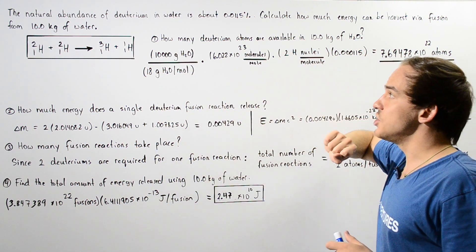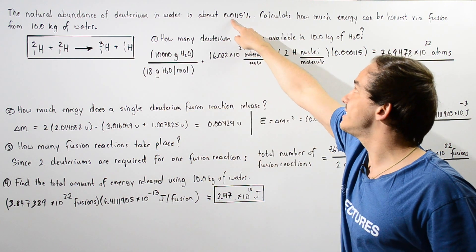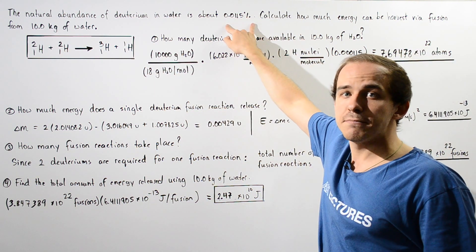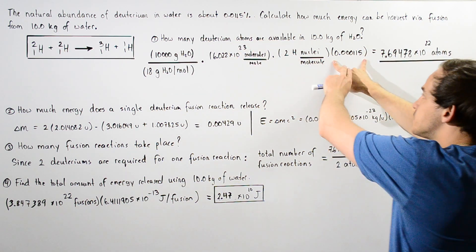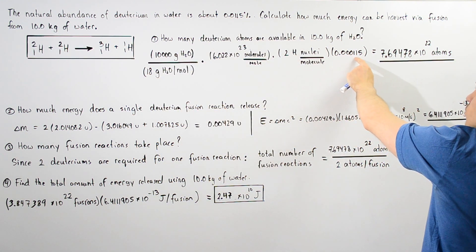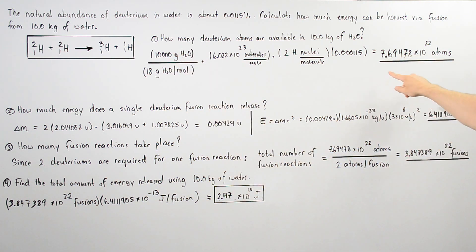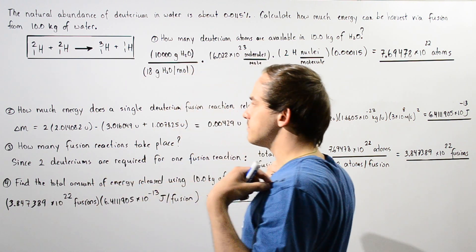And this gives us the total number of hydrogen atoms in 10 kilograms of water. And finally, because we know that the natural abundance of deuterium is 0.0115%, we take this, divide that by 100 to convert it into the fraction, and multiply this by our 0.000115 fractional abundance. This gives us about 7.69478 × 10^22 deuterium atoms are found in 10 kilograms of water.